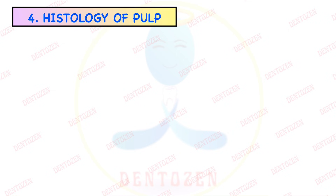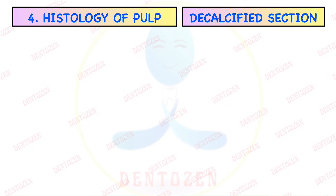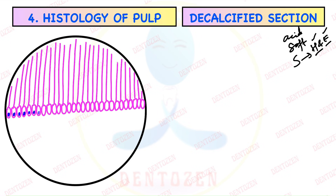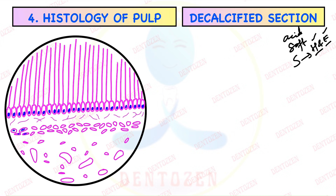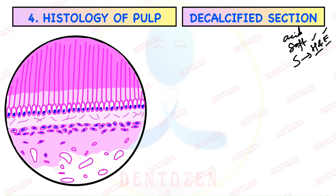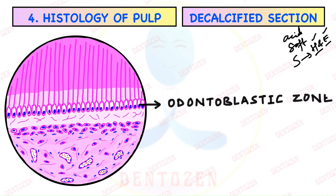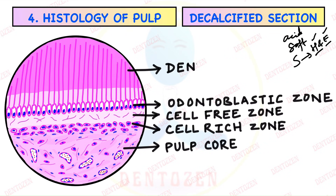For histology of pulp, we first prepare a decalcified section of the tooth by putting it in acid until it becomes soft, then prepare the section and do H&E staining — hematoxylin and eosin staining. The section seen under the microscope shows blue and pink colors. In the diagram: first zone is the odontoblastic zone with columnar-shaped cells, processes extending into dentinal tubules, nuclei towards the basal end; second is the cell-free zone with only fibers; third is the cell-rich zone with many cells; fourth is the pulp core with cells and blood vessels. Labels include odontoblastic zone, cell-free zone, cell-rich zone, pulp core, dentine and predentine.